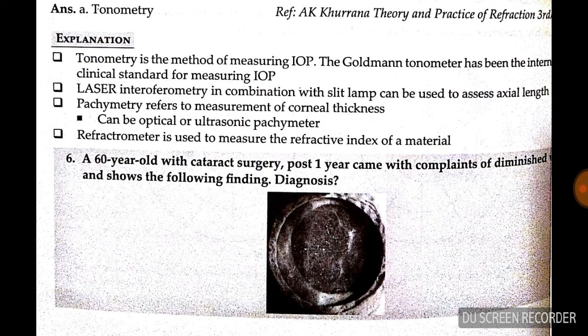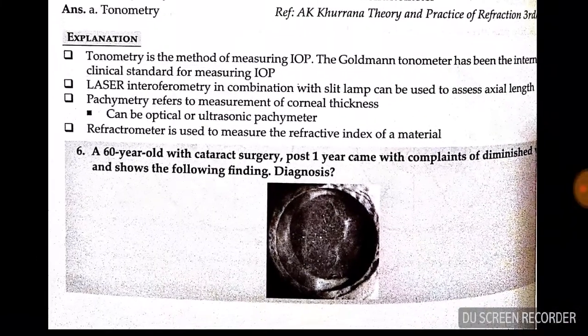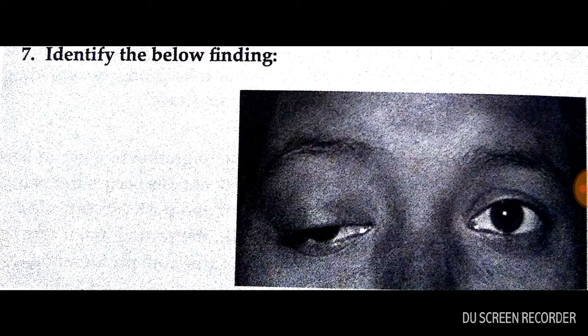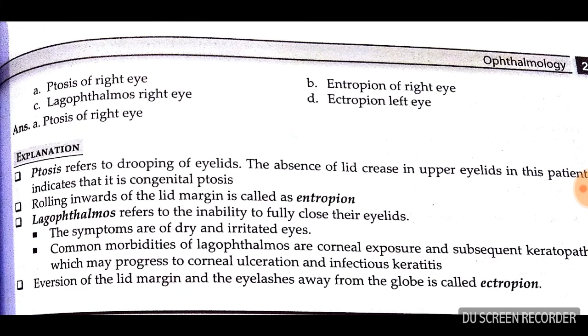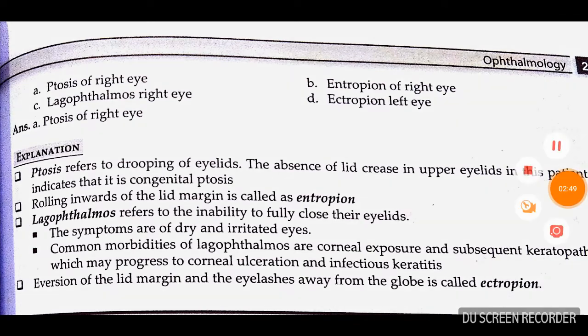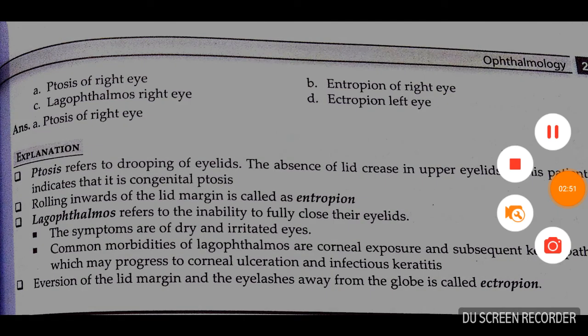Question number 6: a 60-year-old with cataract surgery, post one year, came with complaints of diminished vision. The diagnosis is after-cataract — option B is correct. Finally, a picture shows drooping of the right eye, which is ptosis of the right eye — option A is correct. Have a good day, goodbye. Please subscribe to the channel if you haven't already.